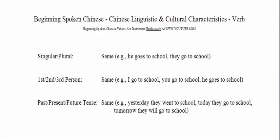For example, the word go means 去 in Chinese. You use the same word 去 for the following three sentences: 'I go to school,' 'you go to school,' 'he goes to school.' The same verb 去 is used throughout.